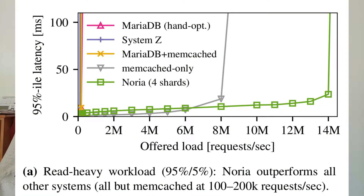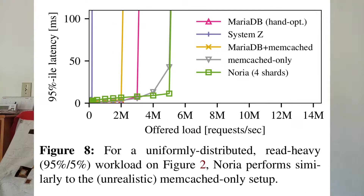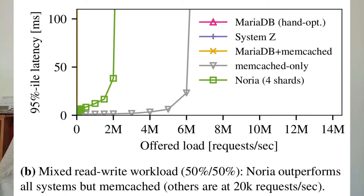So here are some benchmarks that they ran. It's comparing Noria with MariaDB, SystemZ, MariaDB with Memcached, and just Memcached. We see that Noria basically beats everything except for Memcached. But even then, Noria actually scales better than Memcached because Noria doesn't have any locking mechanisms, which I'll get into later. On top of that, the Memcached setup is unrealistic because it's not persistent and it doesn't account for double incrementing. Here's another benchmark with a uniform distribution of requests, and we see that Noria is still comparable to Memcached. It's only when there's a lot of writes that Noria begins to fall off, but this is to be expected since Memcached is only writing to RAM.